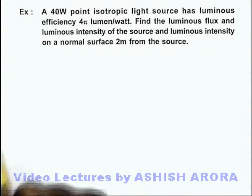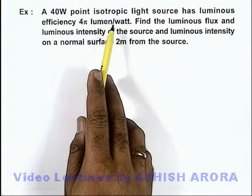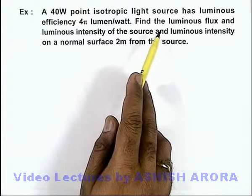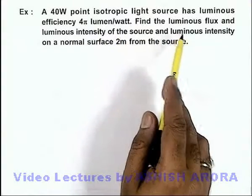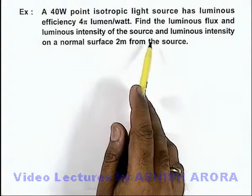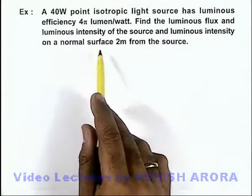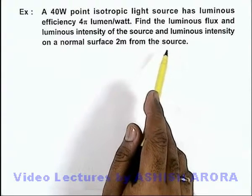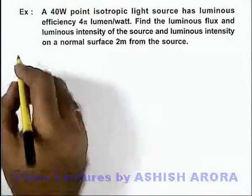In this example, we are given that a 40 watt point isotropic source has a luminous efficiency of 4π lumens per watt. We are required to find the luminous flux and luminous intensity of the source, and the illuminance on a normal surface 2 meters from the source.